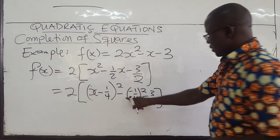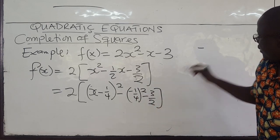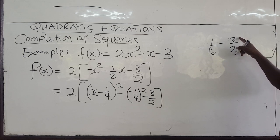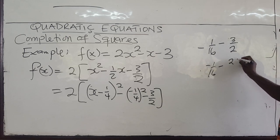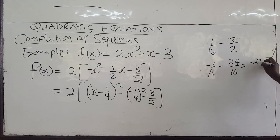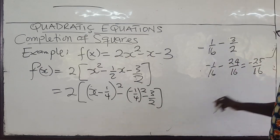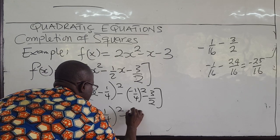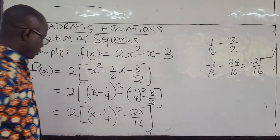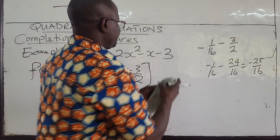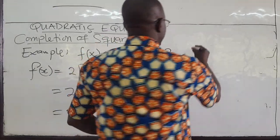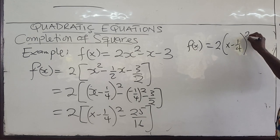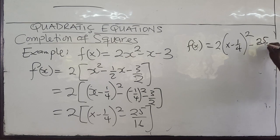Simplifying: negative 1 over 4 squared gives negative 1 over 16. Combining negative 1 over 16 with negative 3 over 2 — multiply 3 over 2 by 8 over 8 to get negative 24 over 16 — gives negative 25 over 16. So the expression inside the brackets is x minus 1 over 4 all squared minus 25 over 16. Multiplying through by 2 gives f of x equals 2 times x minus 1 over 4 squared minus 25 over 8.